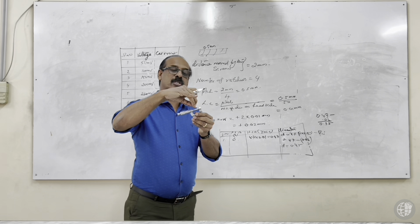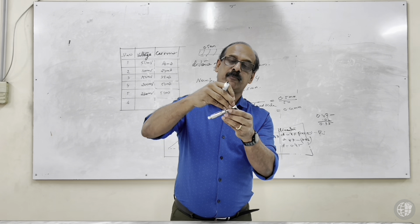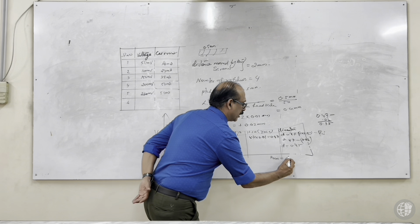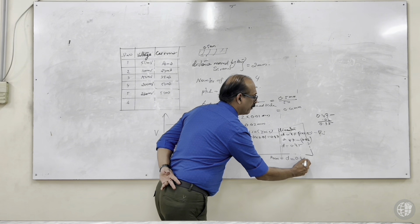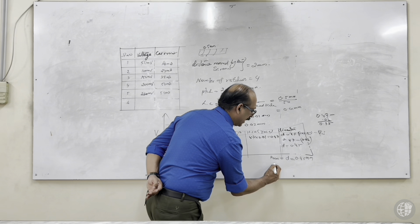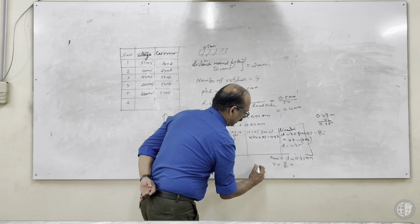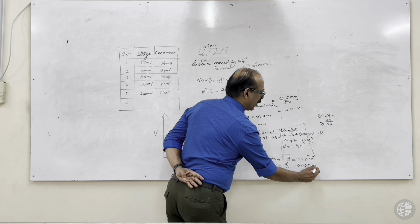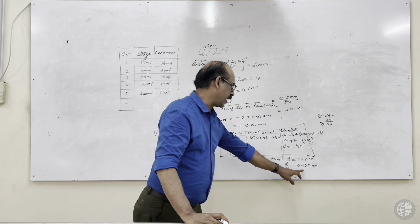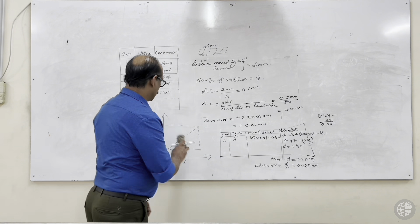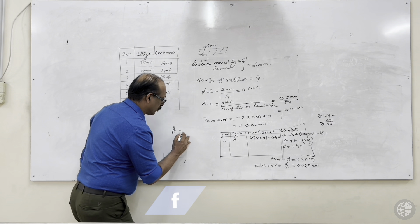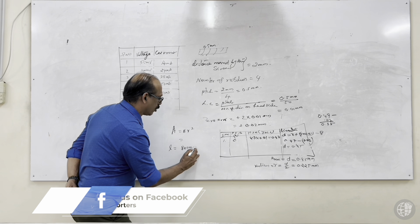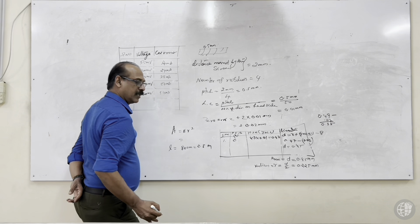Repeat from different portions of the wire — take three or four readings at different positions and calculate the mean. The mean reading gives approximately 0.45 millimeters diameter. Dividing by 2 gives radius r equals 0.225 millimeters. Using A equals pi r squared, we get the area of cross-section. Length is 80 centimeters or 0.8 meters.